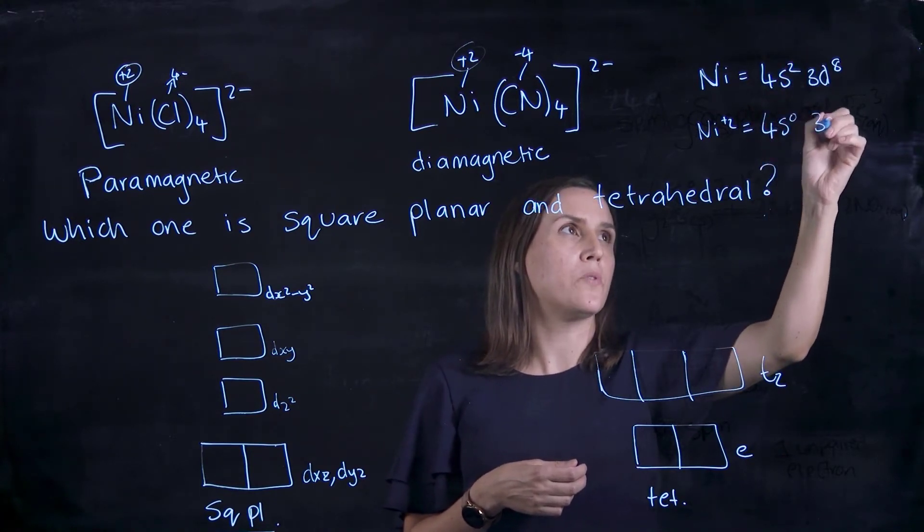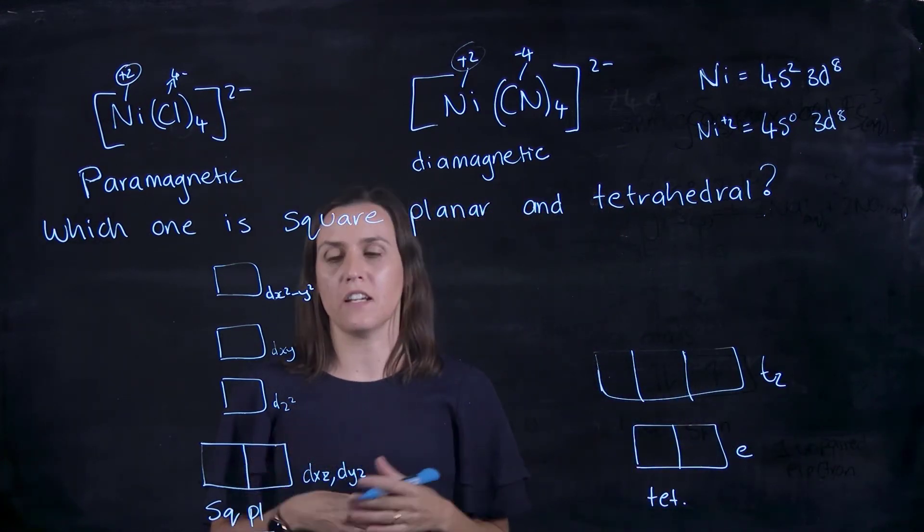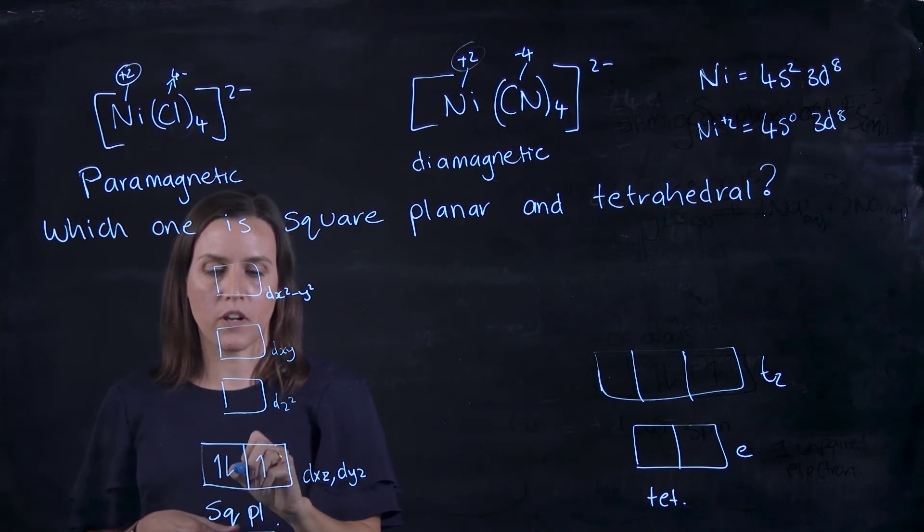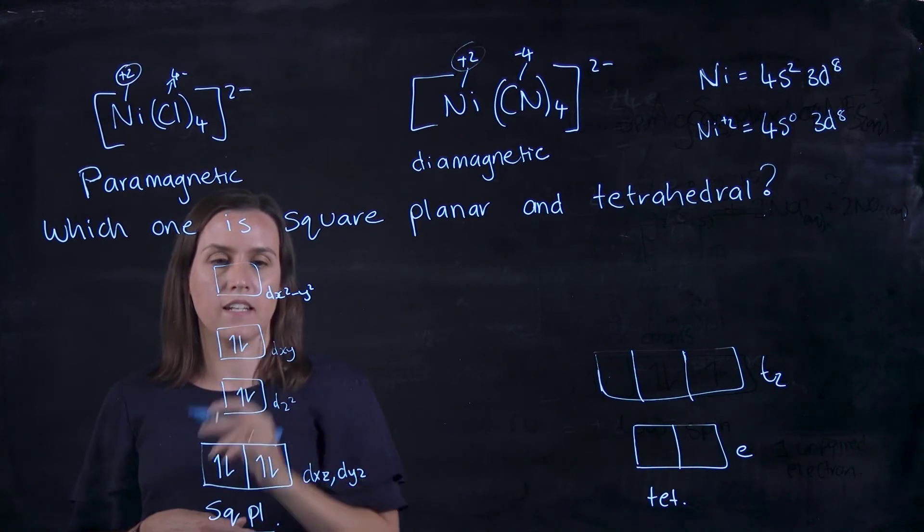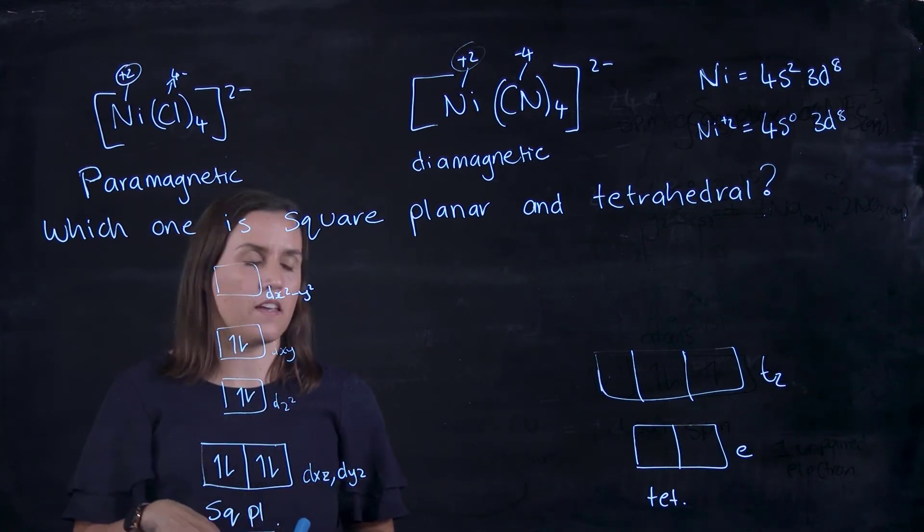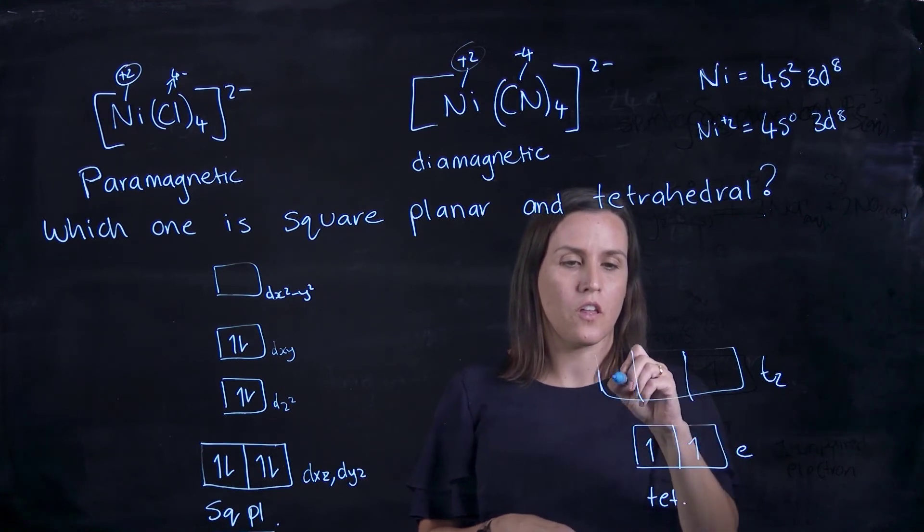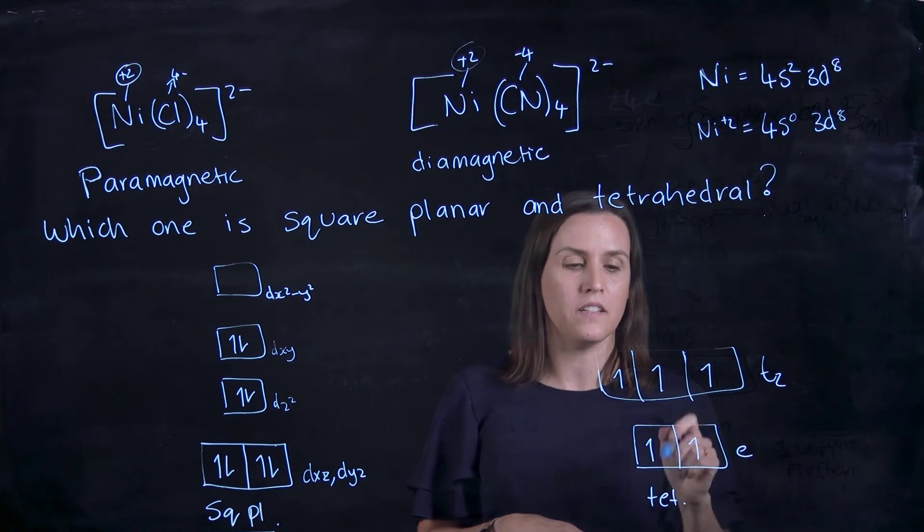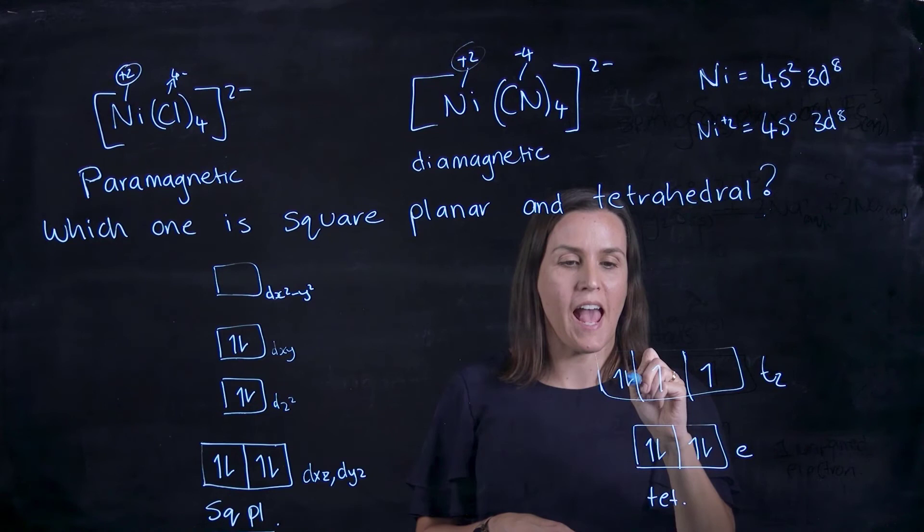If we start here, we've got 1, 2, 3, 4, 5, 6, 7, 8—they're all paired. Now look at the tetrahedral: we've got 1, 2, 3, 4, 5, so remember we fill them all one. So we've got 6, 7, 8.